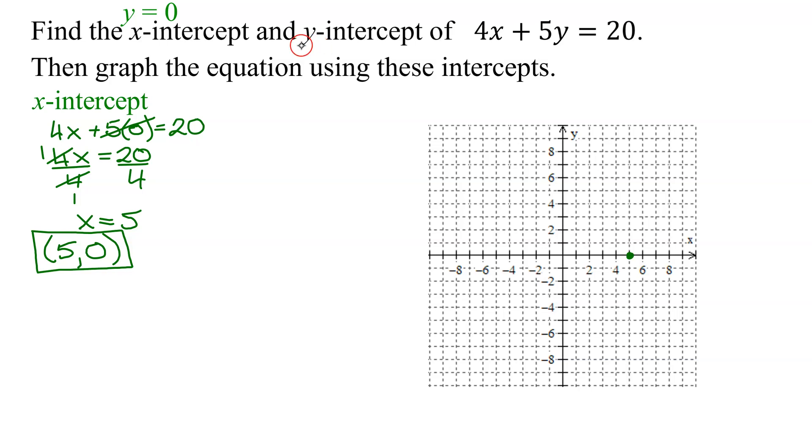Now we need to find the y-intercept of the graph. Well, the y-intercept is where the graph crosses the y-axis. And what is true of every point on the y-axis? X equals 0. So to find the y-intercept, we're going to set x equal to 0 in our equation.